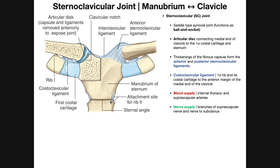That joint is called the sternal angle, also known as the angle of Louis or the manubriosternal joint. On the manubrium, we have a few other pieces. Up at the top, there's a concavity called the jugular notch — we'll come back to that, as there's a ligament that runs over it. On the right and left sides, there's a concavity called the clavicular notch, which tells you that this is the notch where the clavicle articulates.